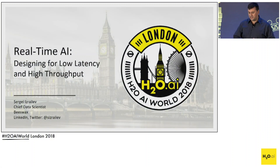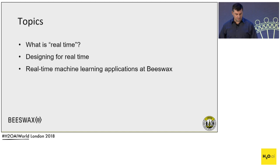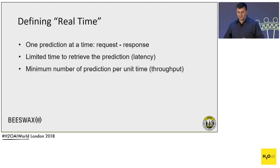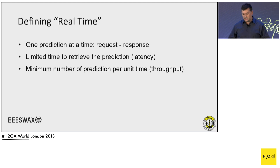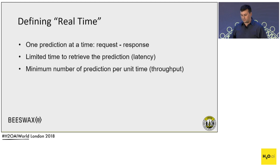I'll talk today about how to design AI applications for real time. We'll start with defining what real time means, then talk about design, and then give an example of Beeswax. Usually a real-time application has a request-response architecture, so we do one prediction at a time or multiple predictions relevant to one request. We have a limited amount of time to respond — that's latency — and there is throughput: how many requests you need to process per unit time.